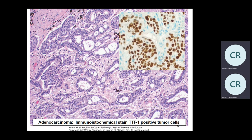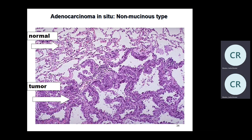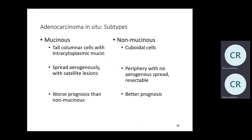TTF1 also stains thyroid tumors — if thyroid is in the differential, add thyroglobulin stain (positive in thyroid, not lung). Mucinous type adenocarcinoma has a lot of clearing in the cytoplasm — tall columnar cells with mucin — and spreads aerogenously with satellite lesions; worse prognosis than non-mucinous. Non-mucinous type has cuboidal cells.